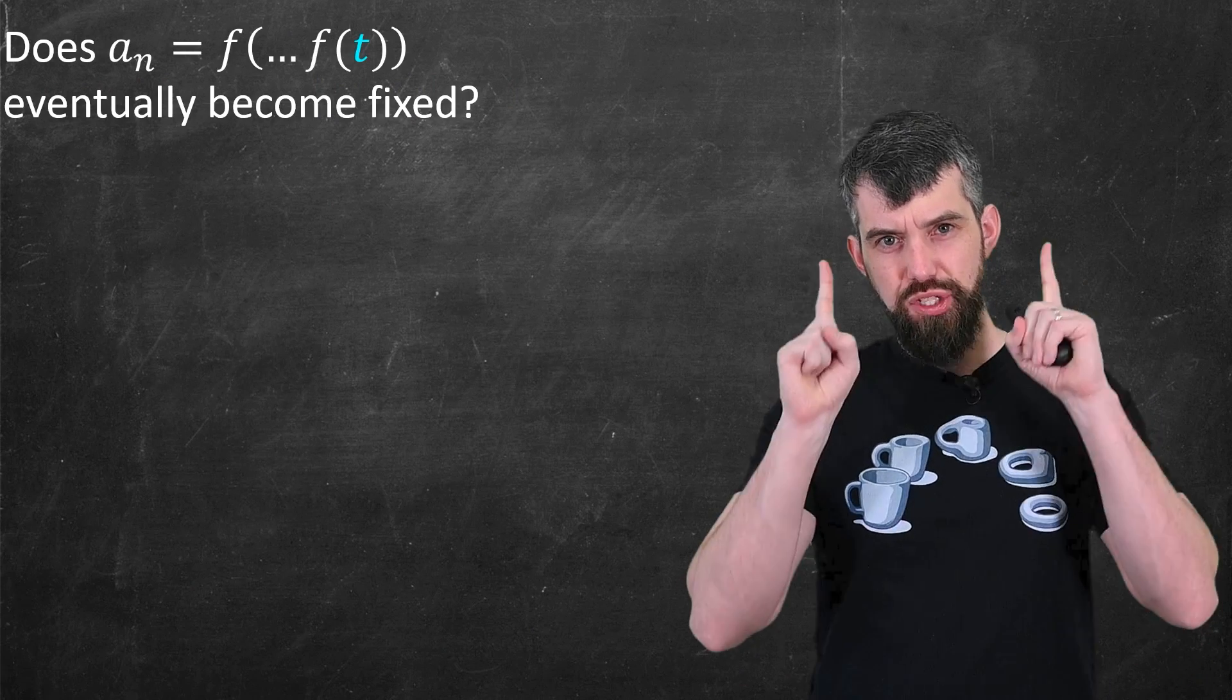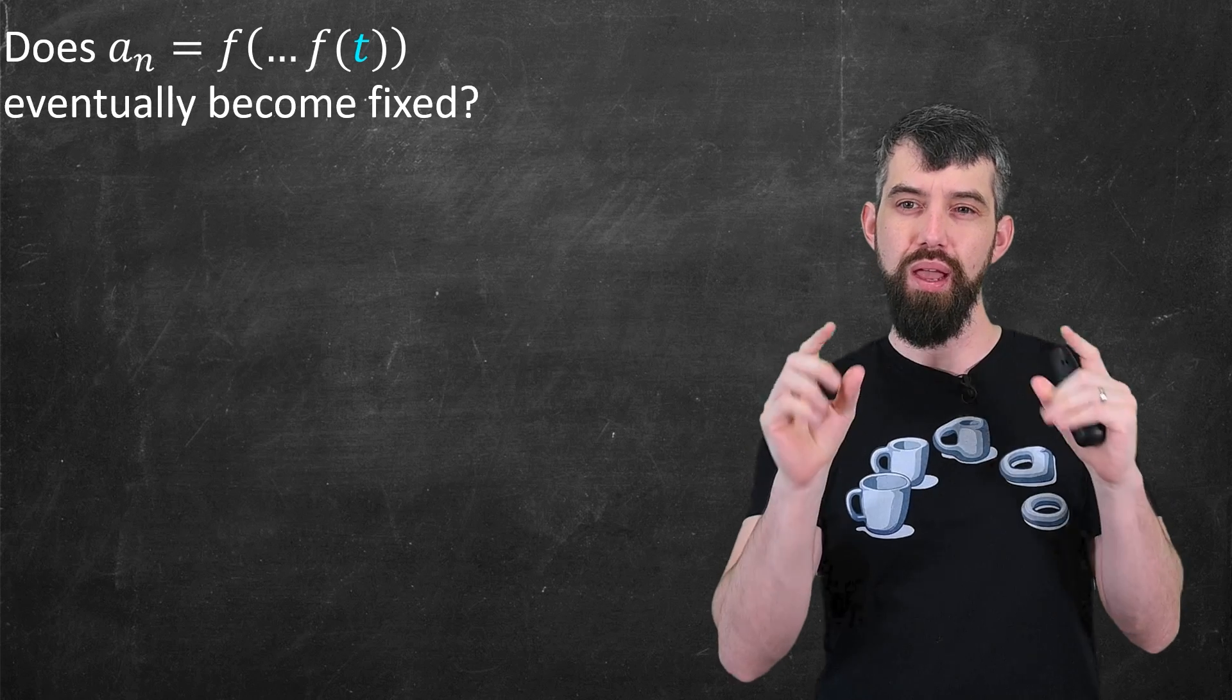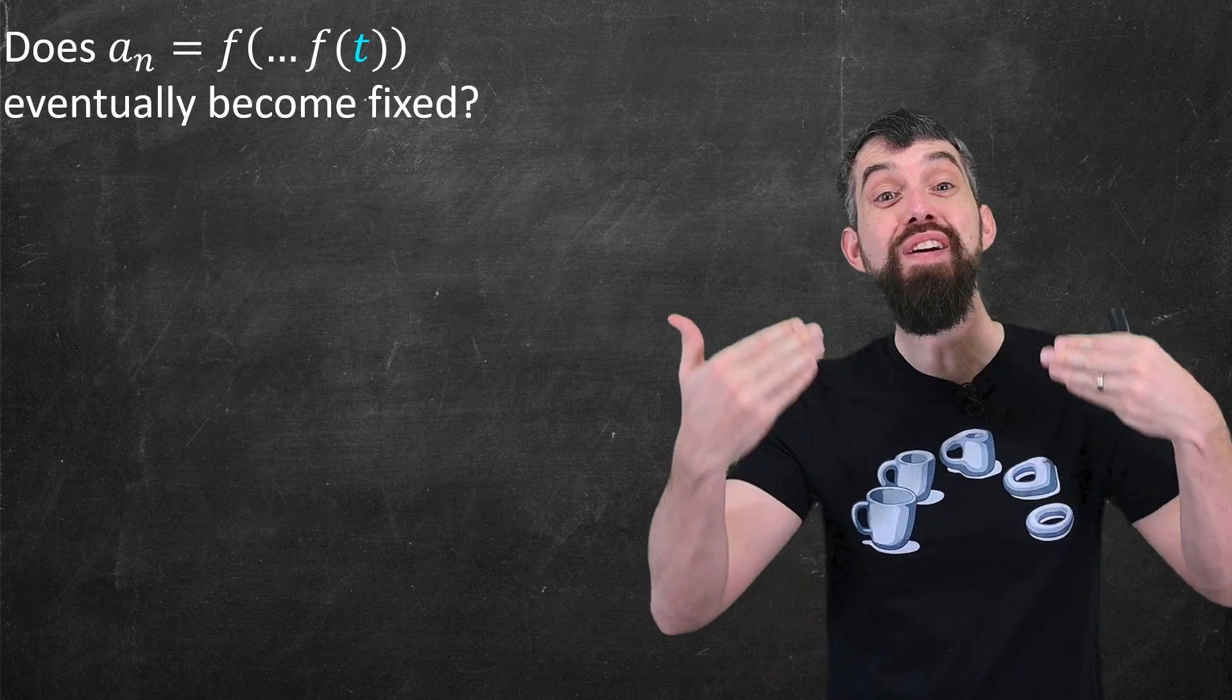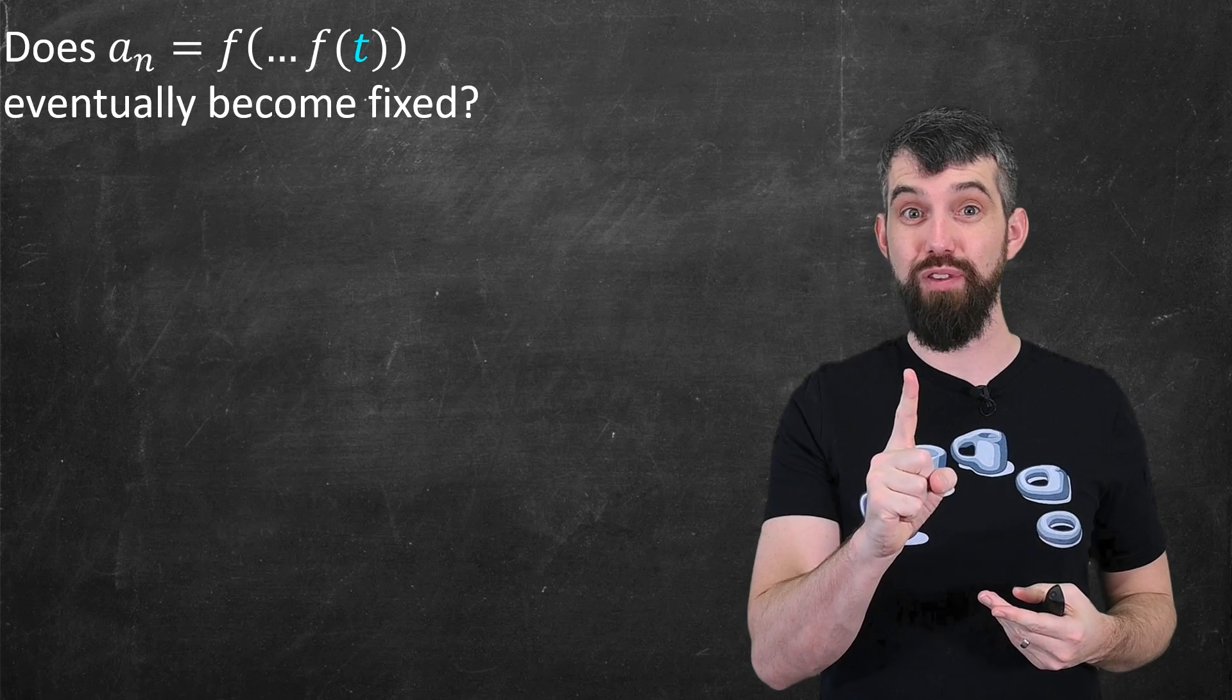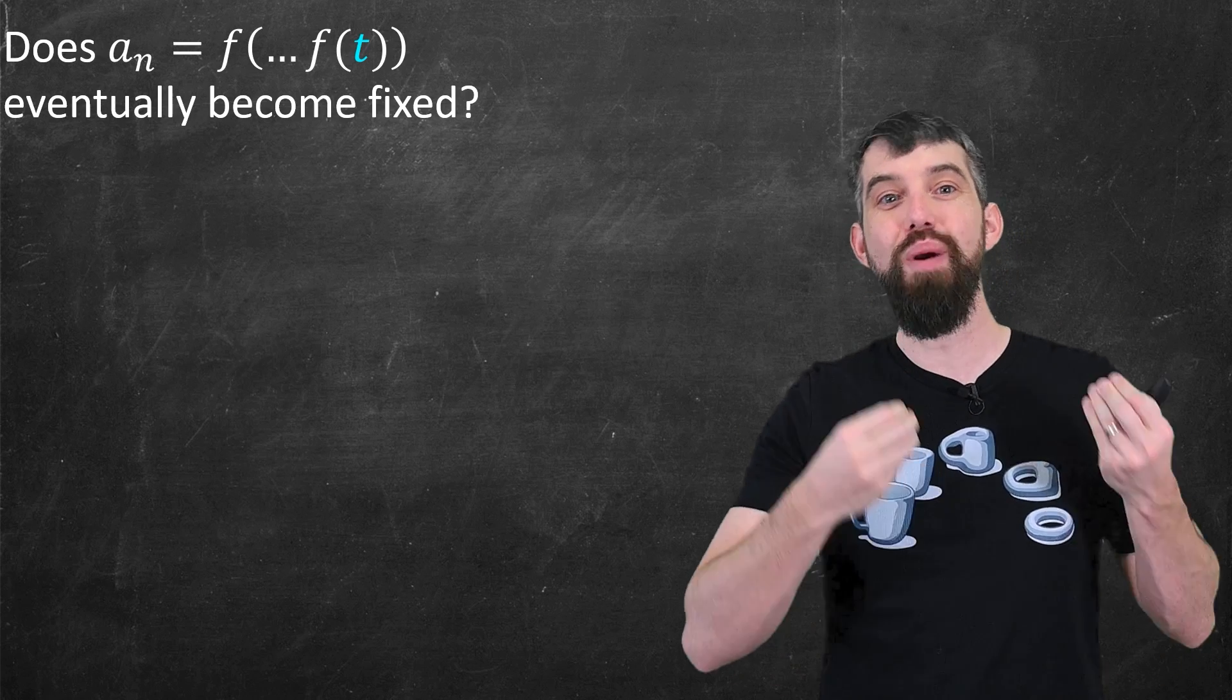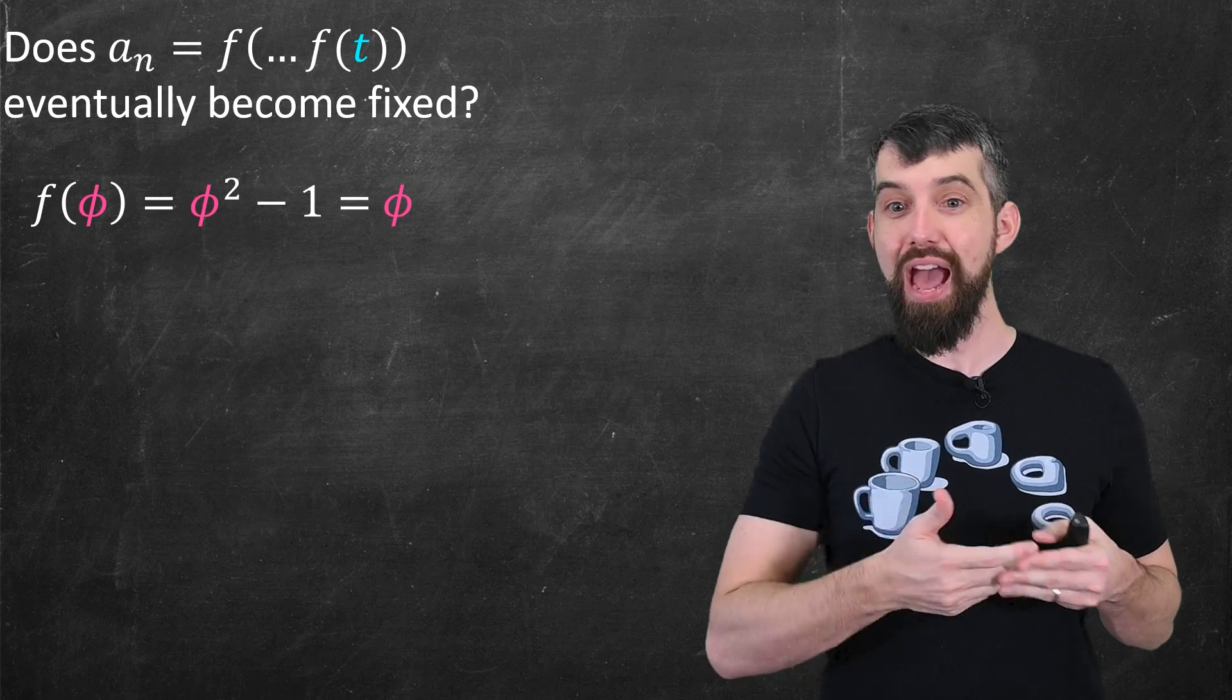Now, recall we had these two fixed points, the golden ratio and negative 1 over the golden ratio. However, there is also a notion of something that eventually becomes fixed. Perhaps it's not fixed when you apply f once, but if you apply f twice or three times or n times, then you end up at one of those fixed points.